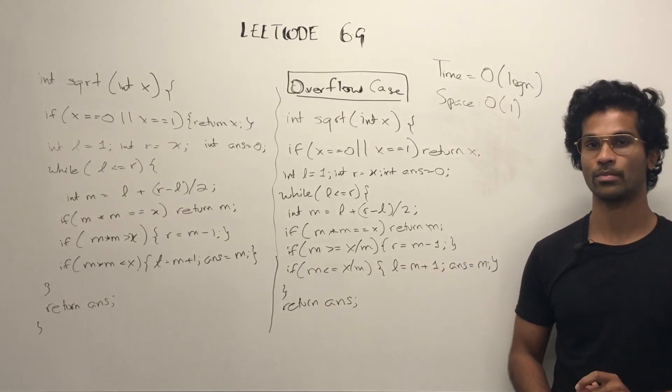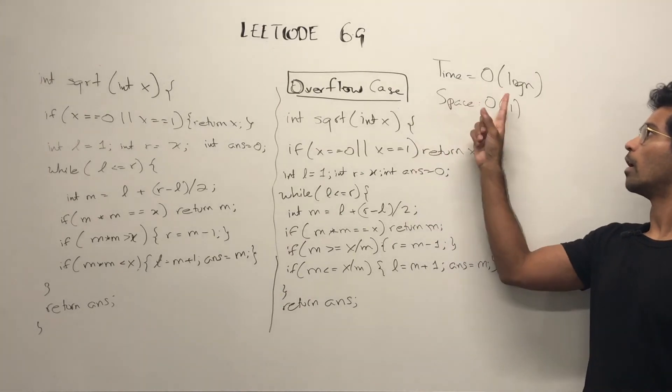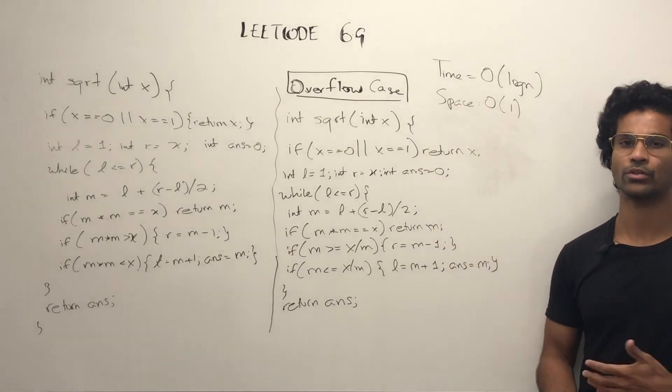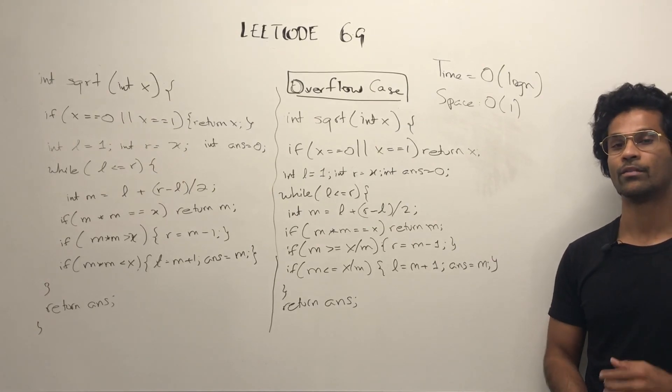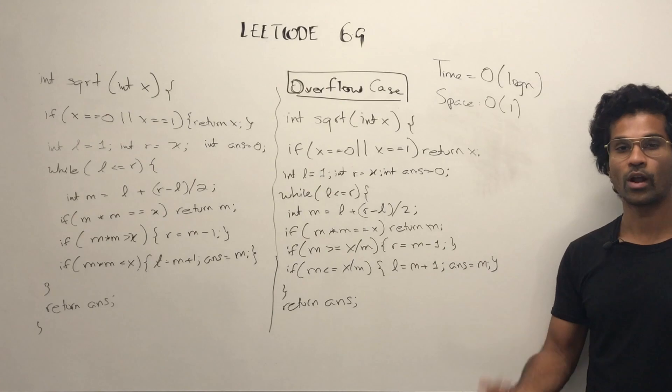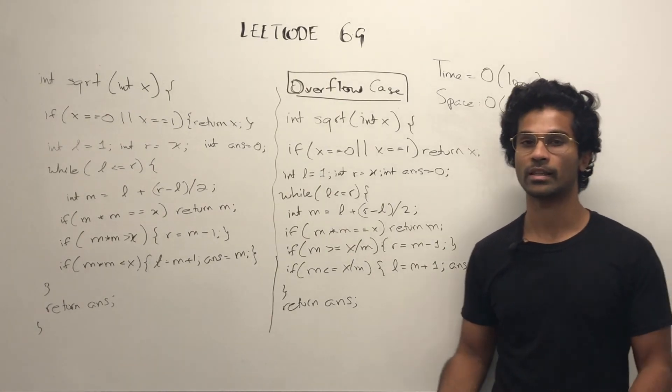Now for the time and space complexity, we have O of log n for the time complexity because we're eliminating half the search space each time. And for space, it's going to be O of constant or O of 1 because we're not using any additional space or anything like that.